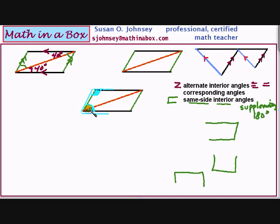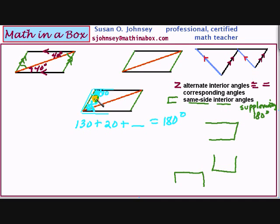All of these will make a supplementary statement for geometry. If this angle is 130 and this one is 20, then 130 plus 20 plus what must equal 180? Well, that's 150. So you can treat it like a little algebra problem: 150 plus x equals 180. So x would be 30 degrees here — this angle would be 30.